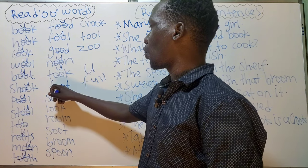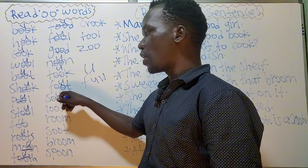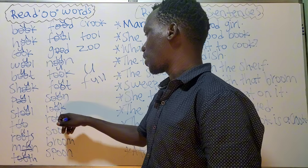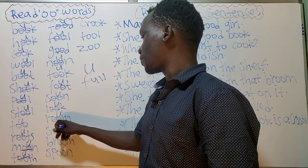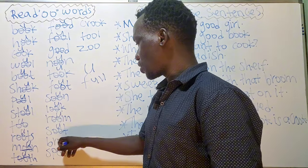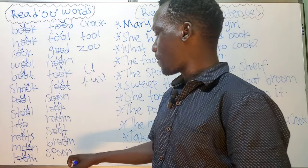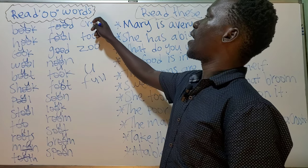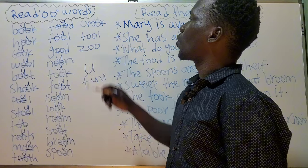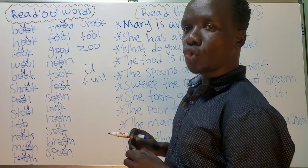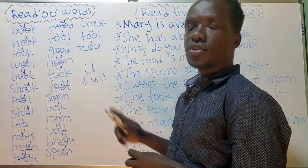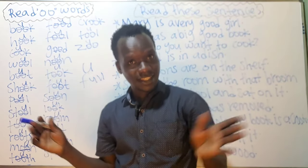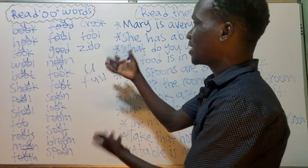Took. Foot. Soon. Look. Room. Soot. Broom. Spoon. Too. Tool. Just simple, simple, easy — just like that. Nothing hard here.